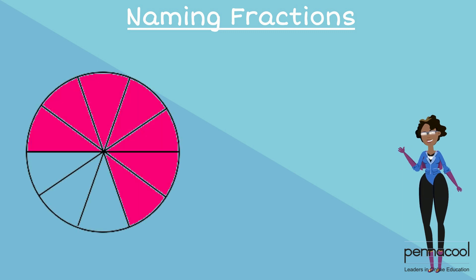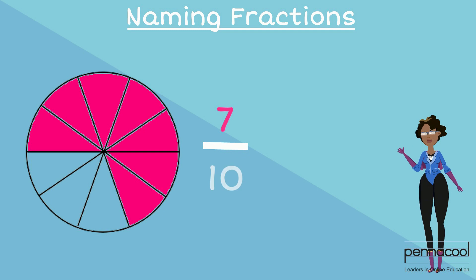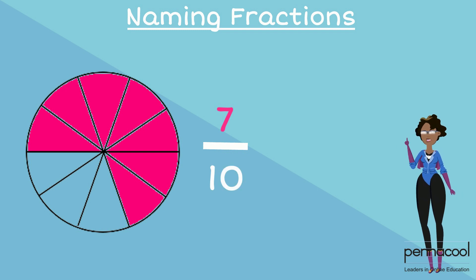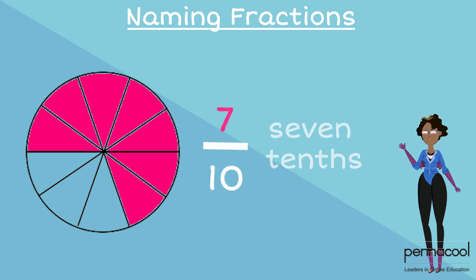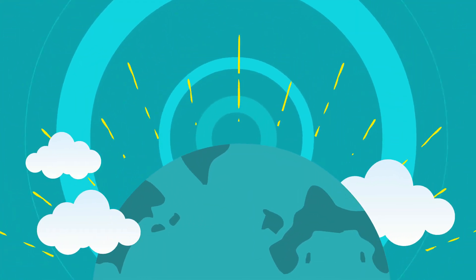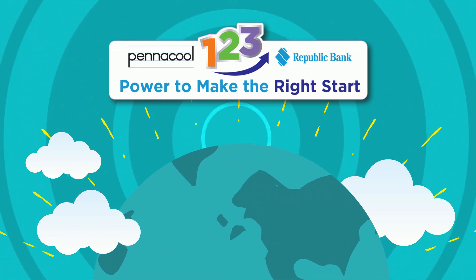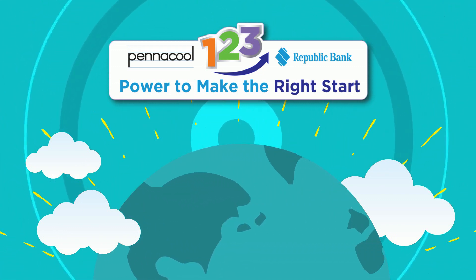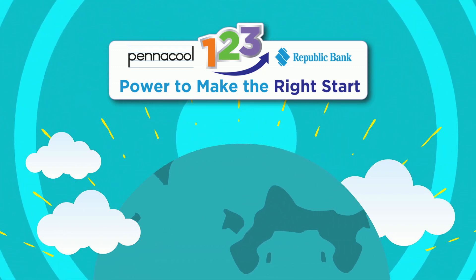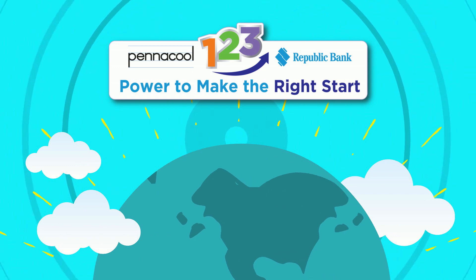What would we name the fraction shown? There are seven parts shaded out of ten. Hence, we would name our fraction seven tenths. Thank you for visiting Math City today. Try the exercises on Pinnacle.com to earn points and win great prizes.